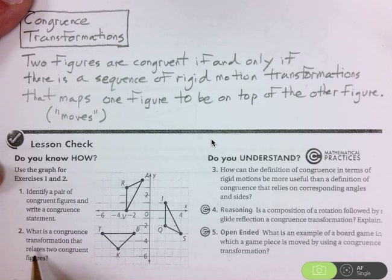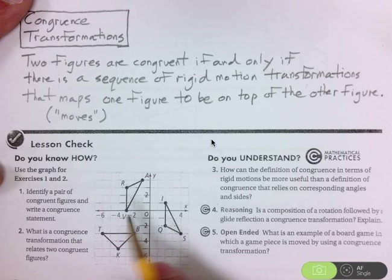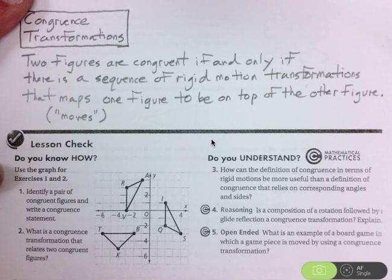So let's actually do number two first. Let's write the transformation so that I can map one of the triangles onto the other triangle, and then we'll write the congruence statement. That's the most important thing I want you to recognize.